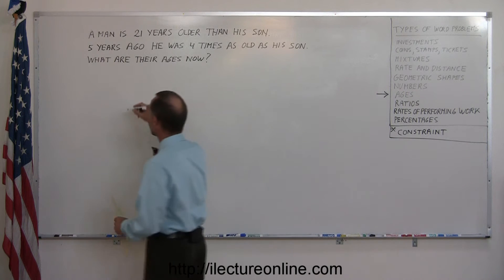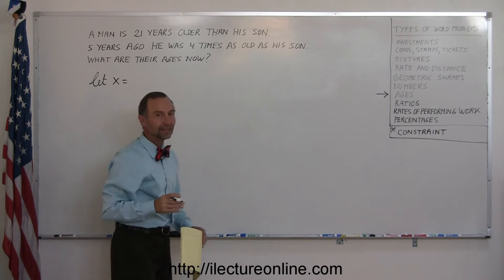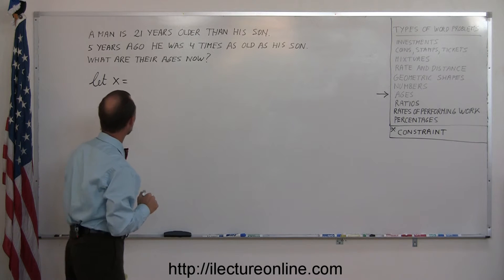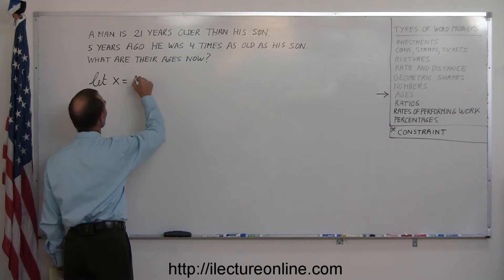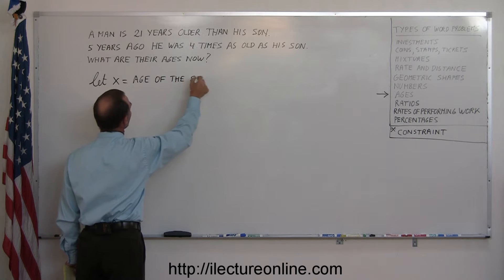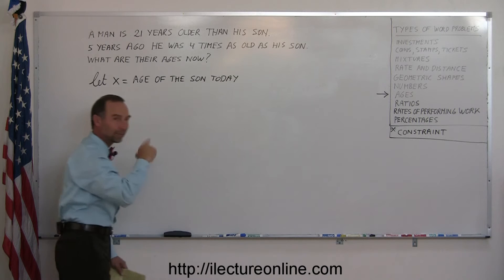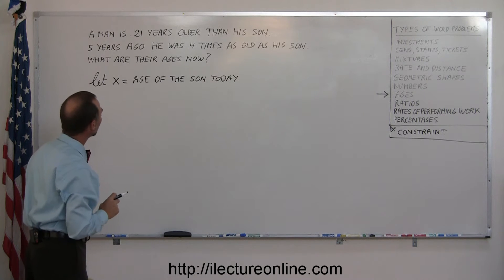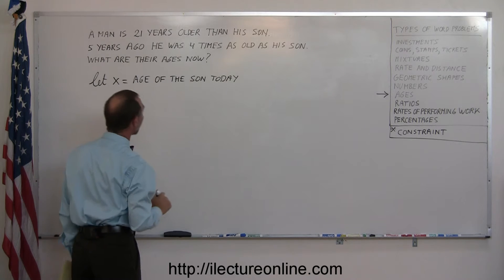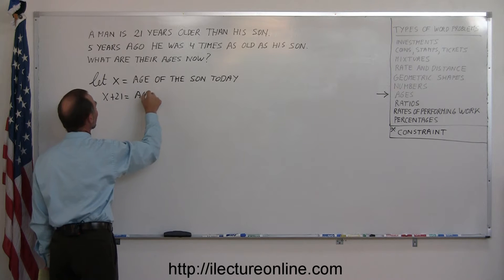Again, just like most problems, you're going to let x equal something. In this case, we're going to let x equal the youngest of the people involved. In this case, there's two people, a father and a son. So let x equal the age of the son today. Be very specific that it wasn't in the future or in the past, but today. So how old is his dad today? His dad is 21 years older than his son. So x plus 21 equals the age of the father.